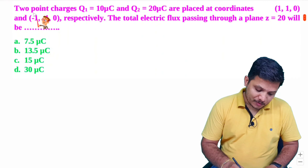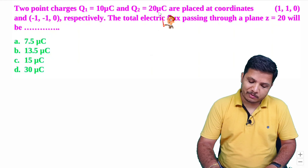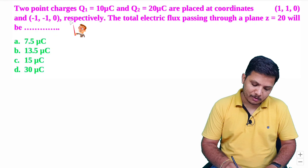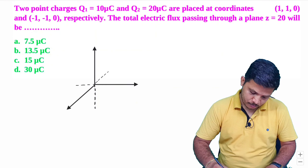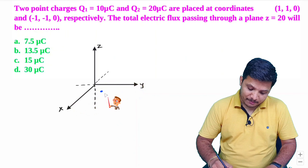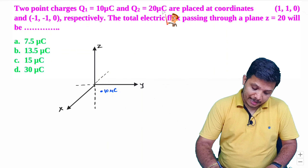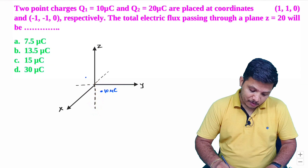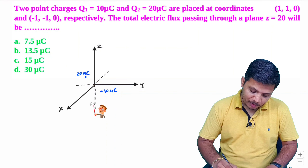Let us look at the second question. Two point charges, Q1 of 10 micro coulomb and Q2 of 20 micro coulomb, are placed at coordinates (1, 1, 0) and (−1, −1, 0) respectively. Q1 is at (1, 1, 0) on the XY plane, and Q2 of 20 micro coulomb is at (−1, −1, 0), also on the XY plane since Z is zero.